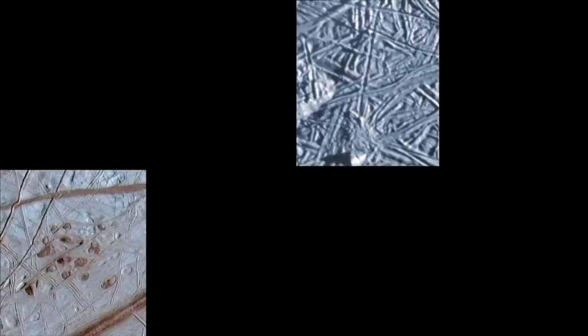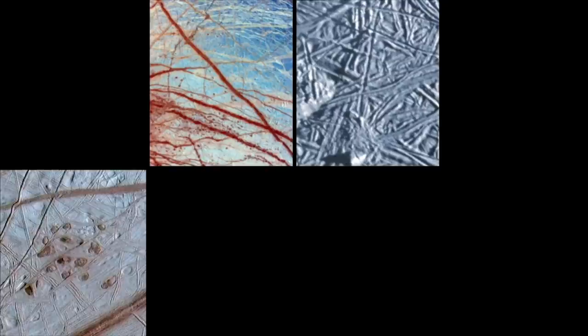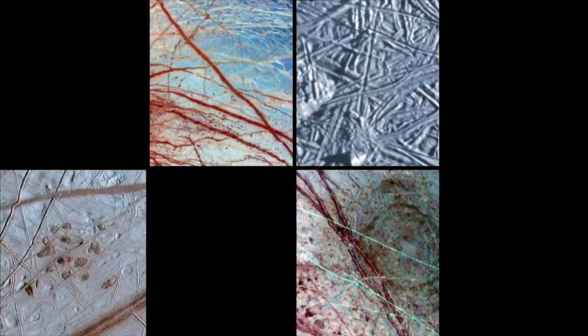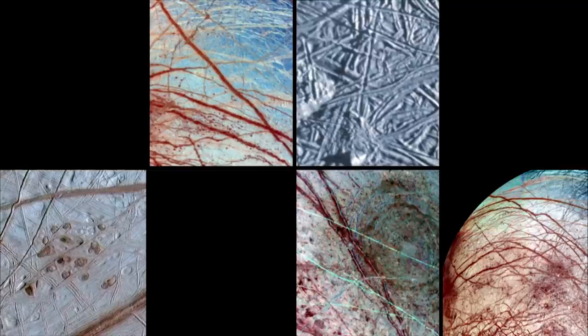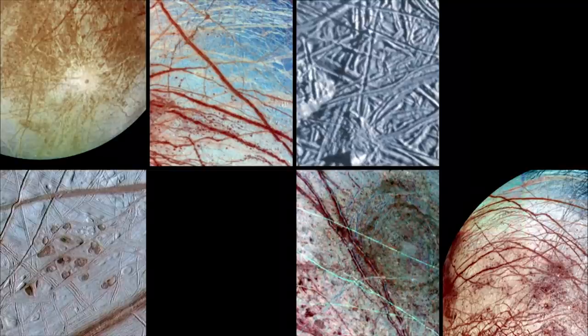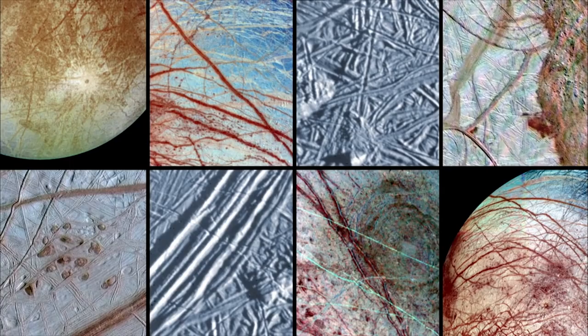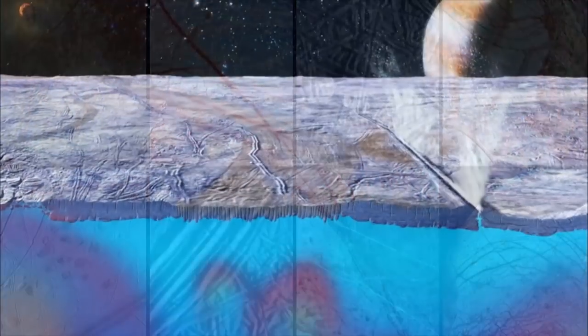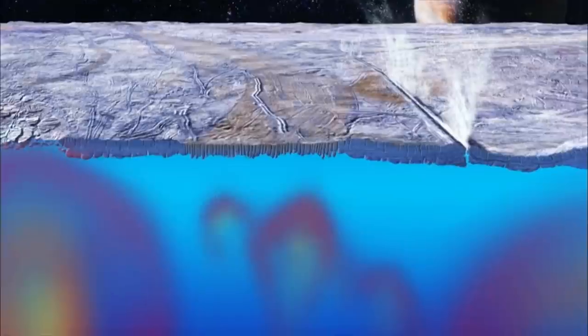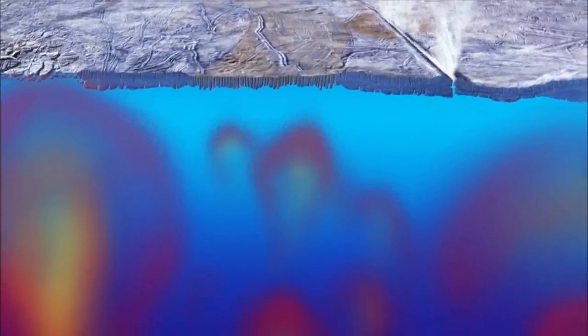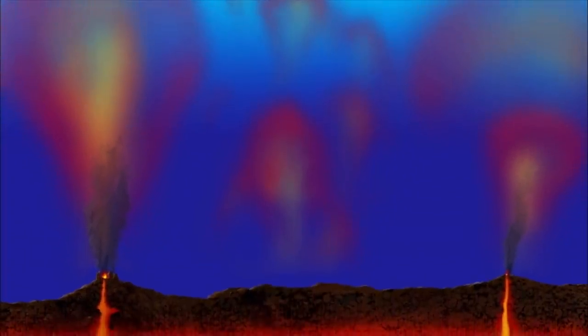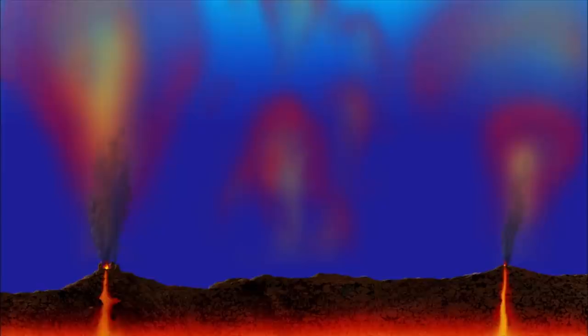Some of the cracks on Europa have a darker and more reddish hue than the rest of the surface ice. This could mean that the underlying ocean is rich in sulfur compounds and perhaps organic molecules. Indications are that in some places this ocean may be less than 10 kilometers from the surface, possibly within reach of a future attempt to drill down and explore.